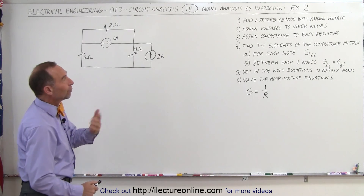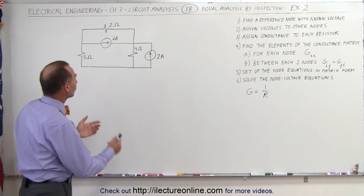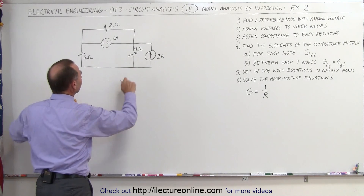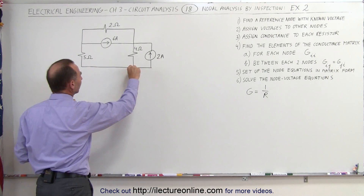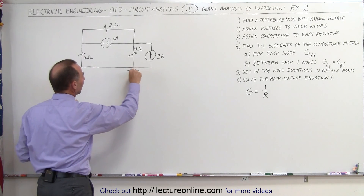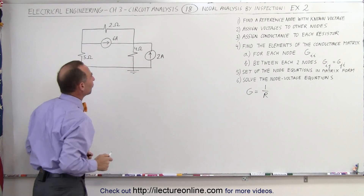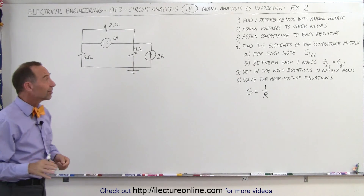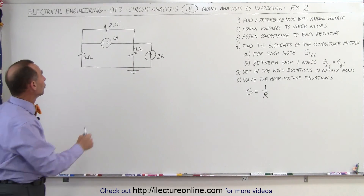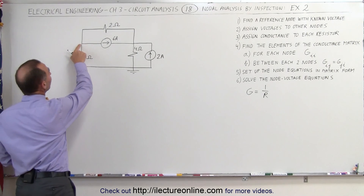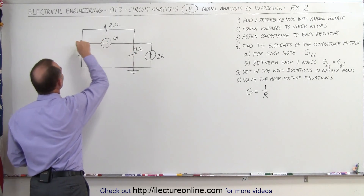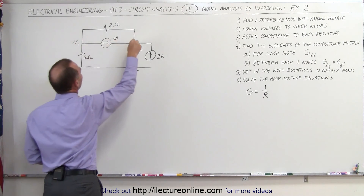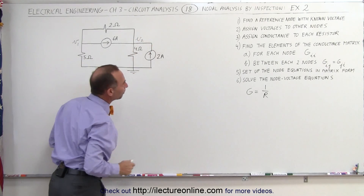First, we find a reference node — we take the bottom of the circuit and connect it to ground. That becomes our reference node at zero volts. Next, we assign voltages to the other nodes. We have one node here and another node there. Let's call this V1 and let's call this node V2.